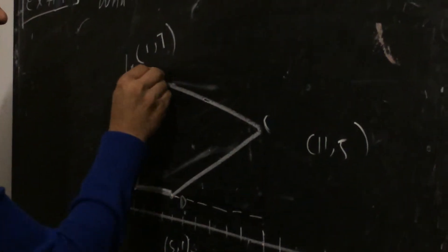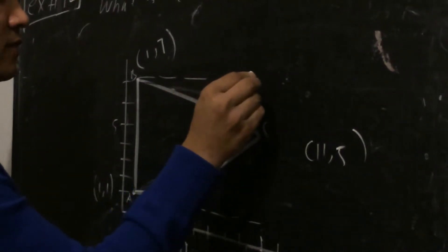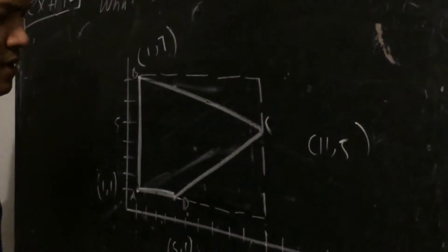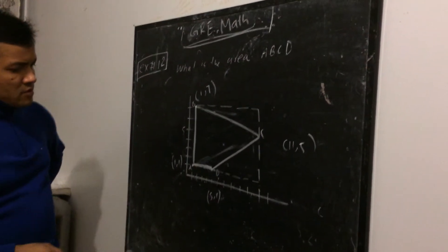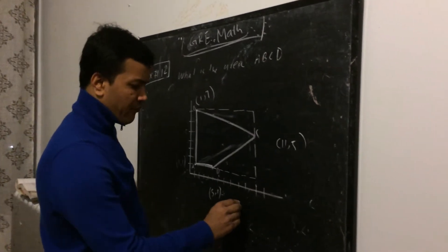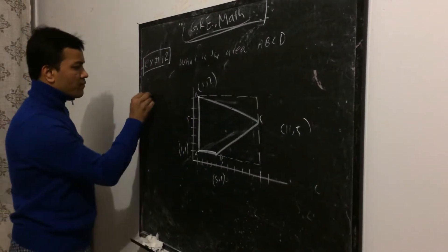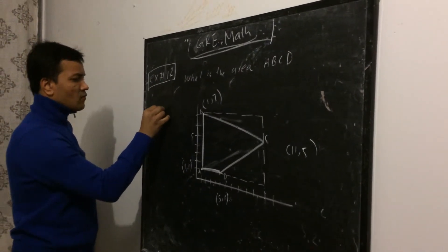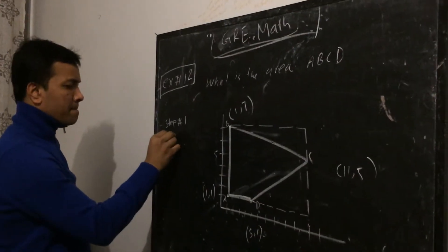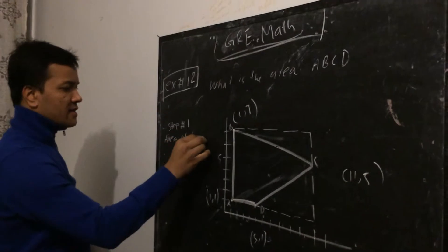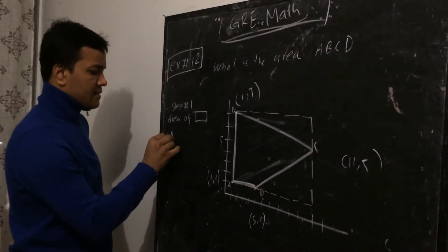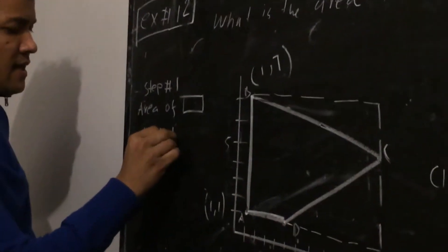Okay, so now it looks like a rectangle, right? So rectangle, what is the area of rectangle? Step 1. Area of rectangle is base times height.